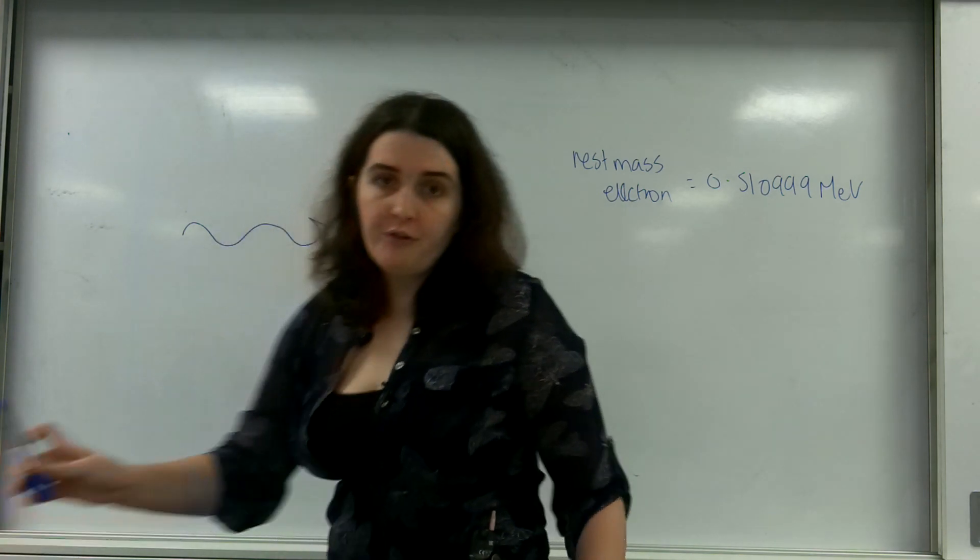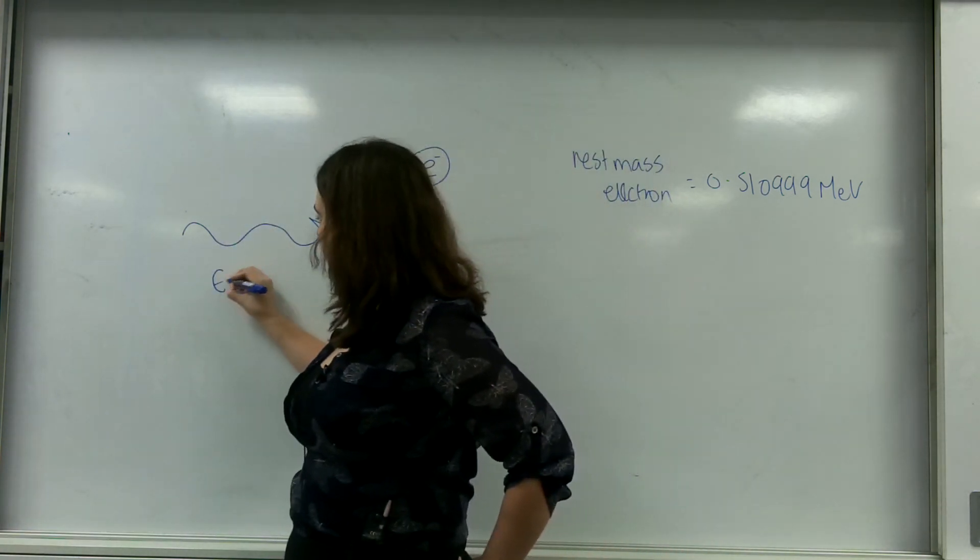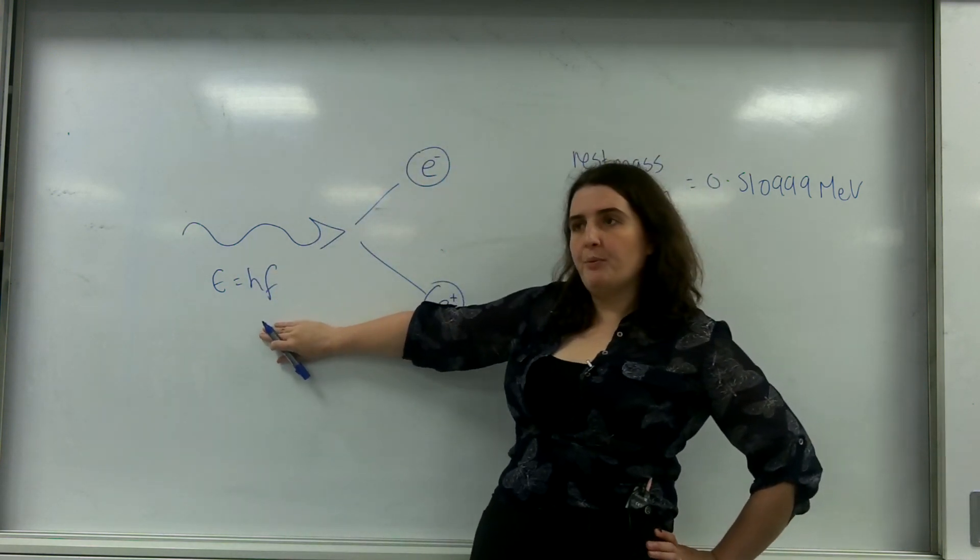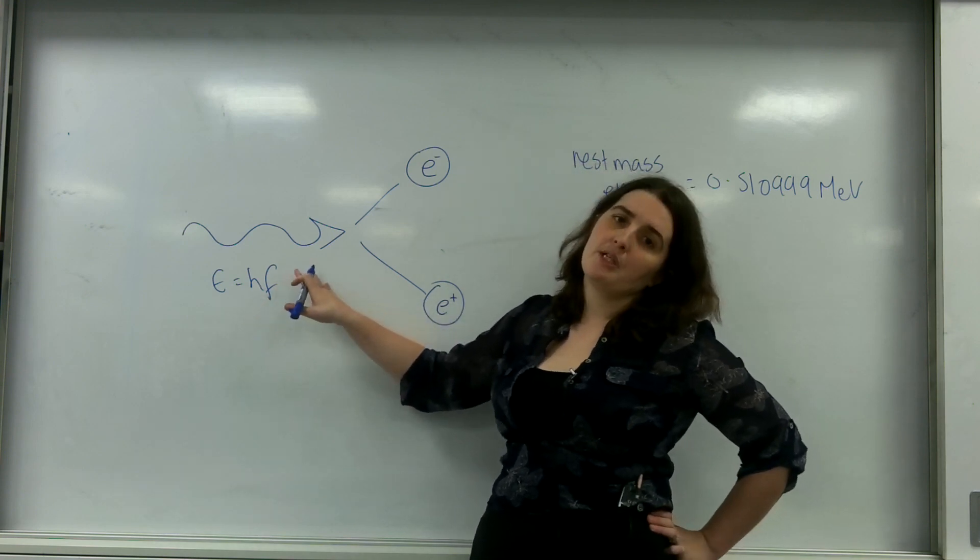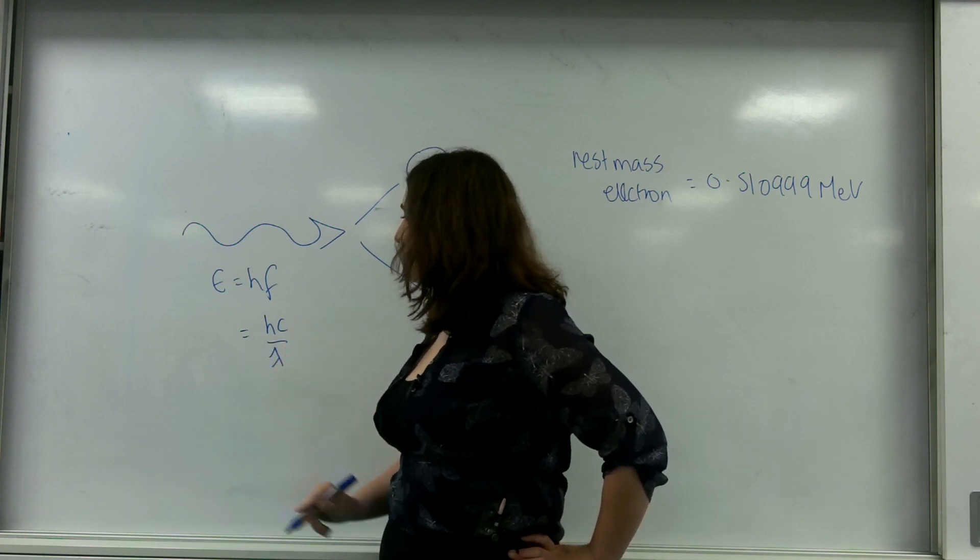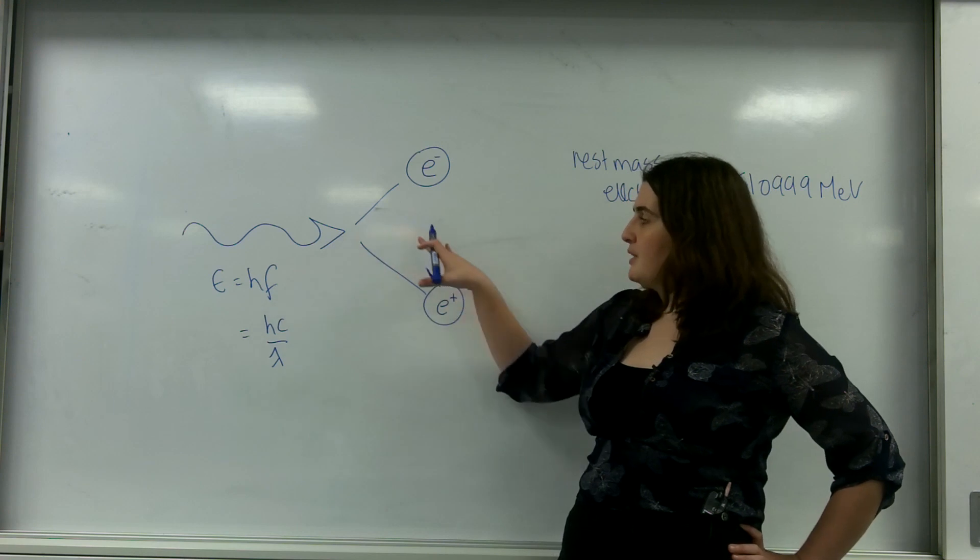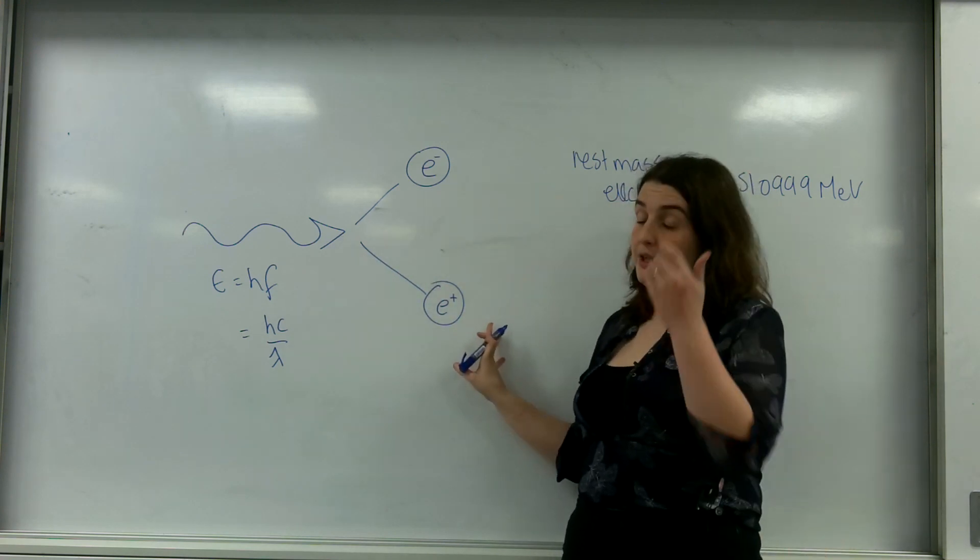So what I've got here is a photon of light coming in with an energy. And remember the energy formula is energy equals H, which is Planck's constant, times the frequency of the light. It could also be Hc over lambda as well. Now this photon has come in and this photon has made an electron and an antielectron, also known as a positron.